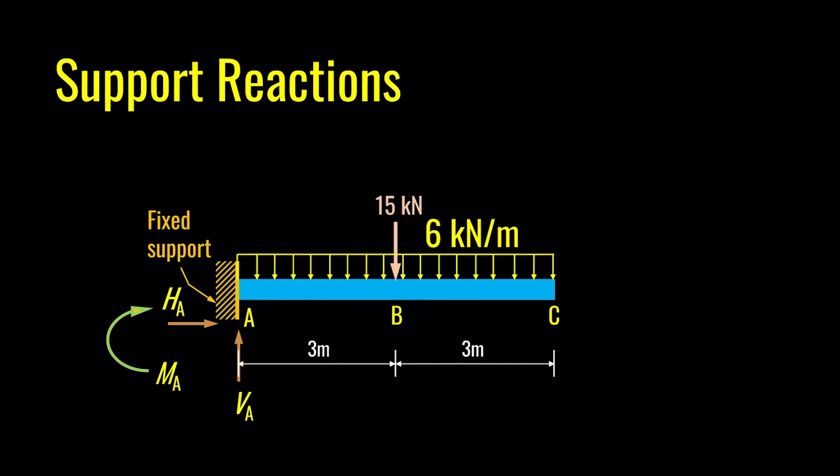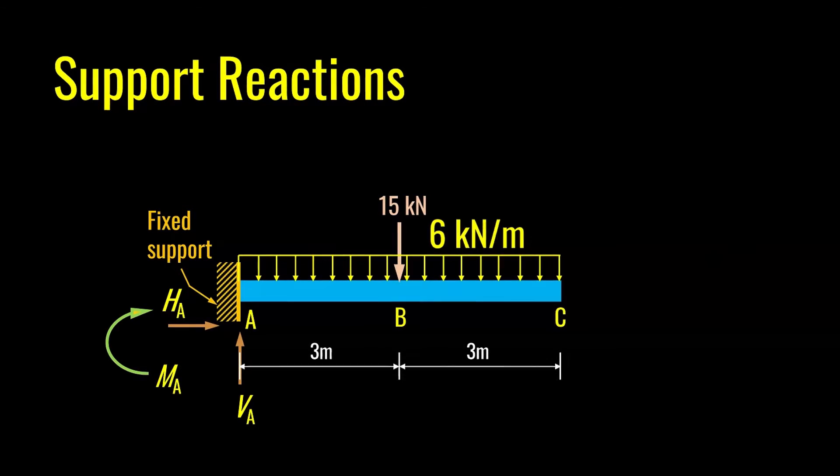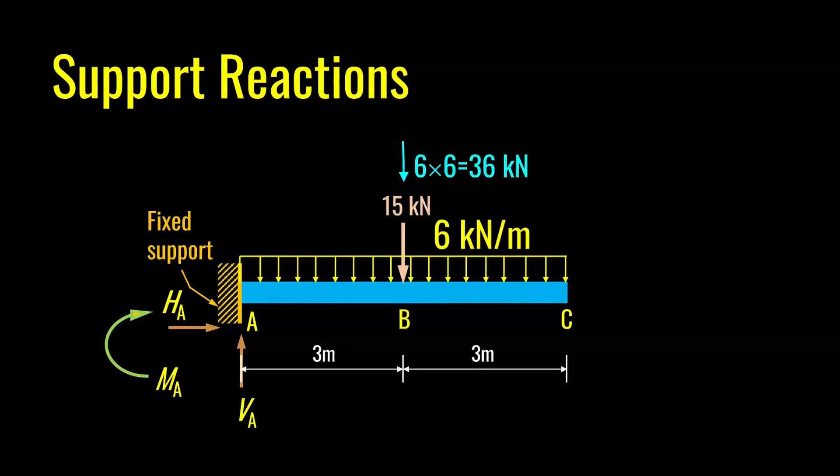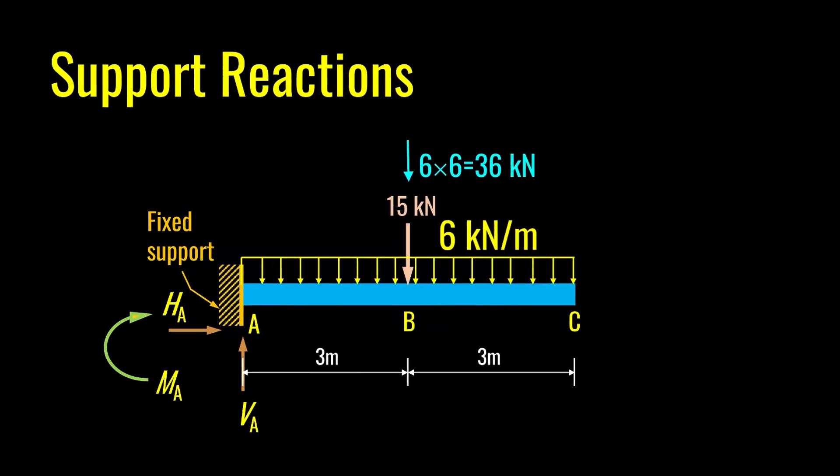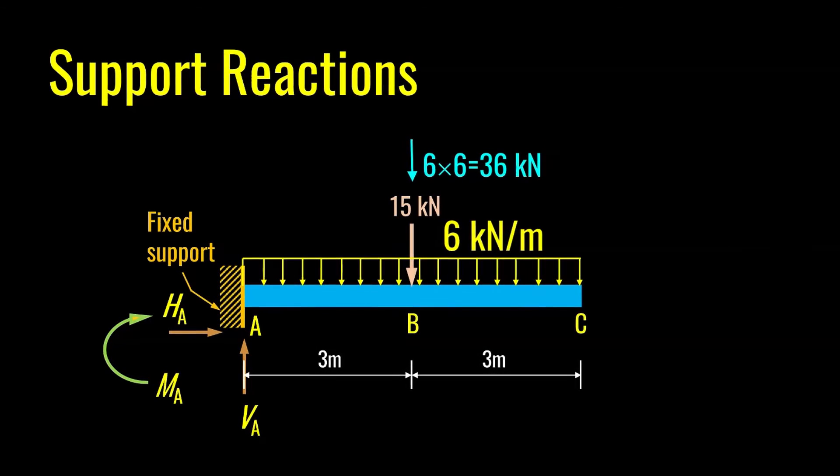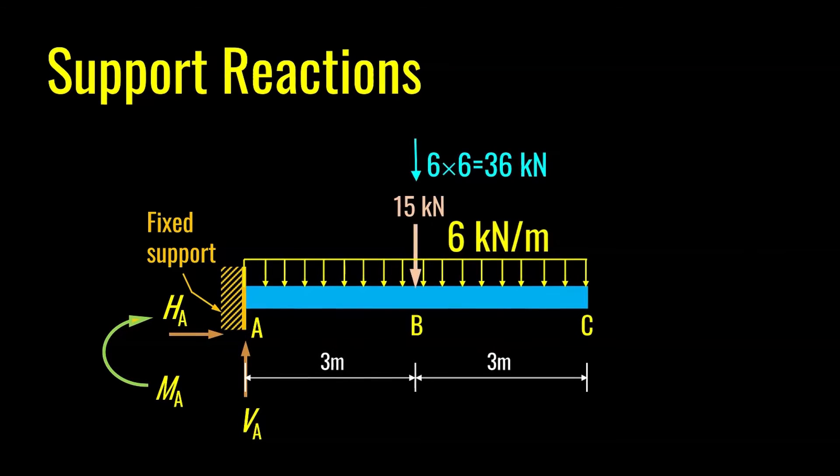Also, you have to work out total load due to this uniformly distributed load. As this load is spread on 6 meter span, the total load will come out to be 6 kN per meter multiplied by the span. Here it is spread on 6 meters, so we multiply 6 with 6, we get 36 kN.